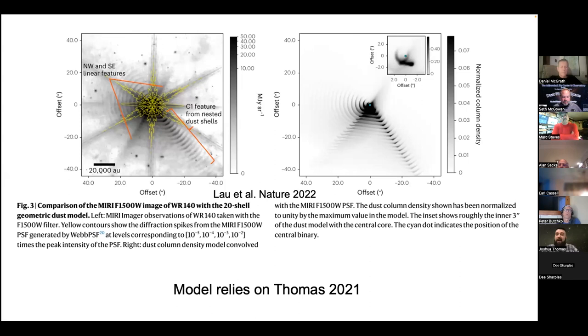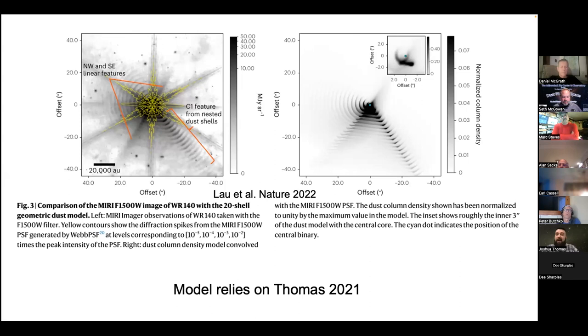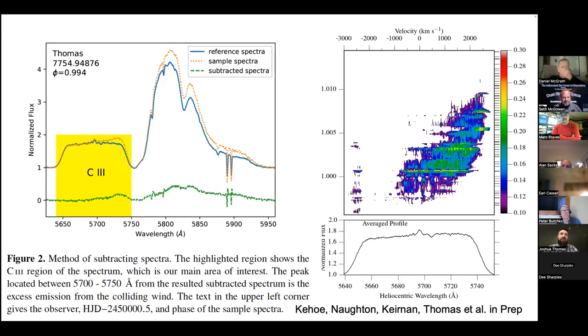If you care for the boring details, this Nature paper by Lau et al, 2022, this is the data from James Webb on the left. This is the computational model, putting all the physics we know about this into a computer, letting it run, and see what happens. They can make a model image that is strikingly similar to what we observe. When I saw this, my mind was blown. My little part in this is they needed the orbit for this. They used the orbit that I helped update.